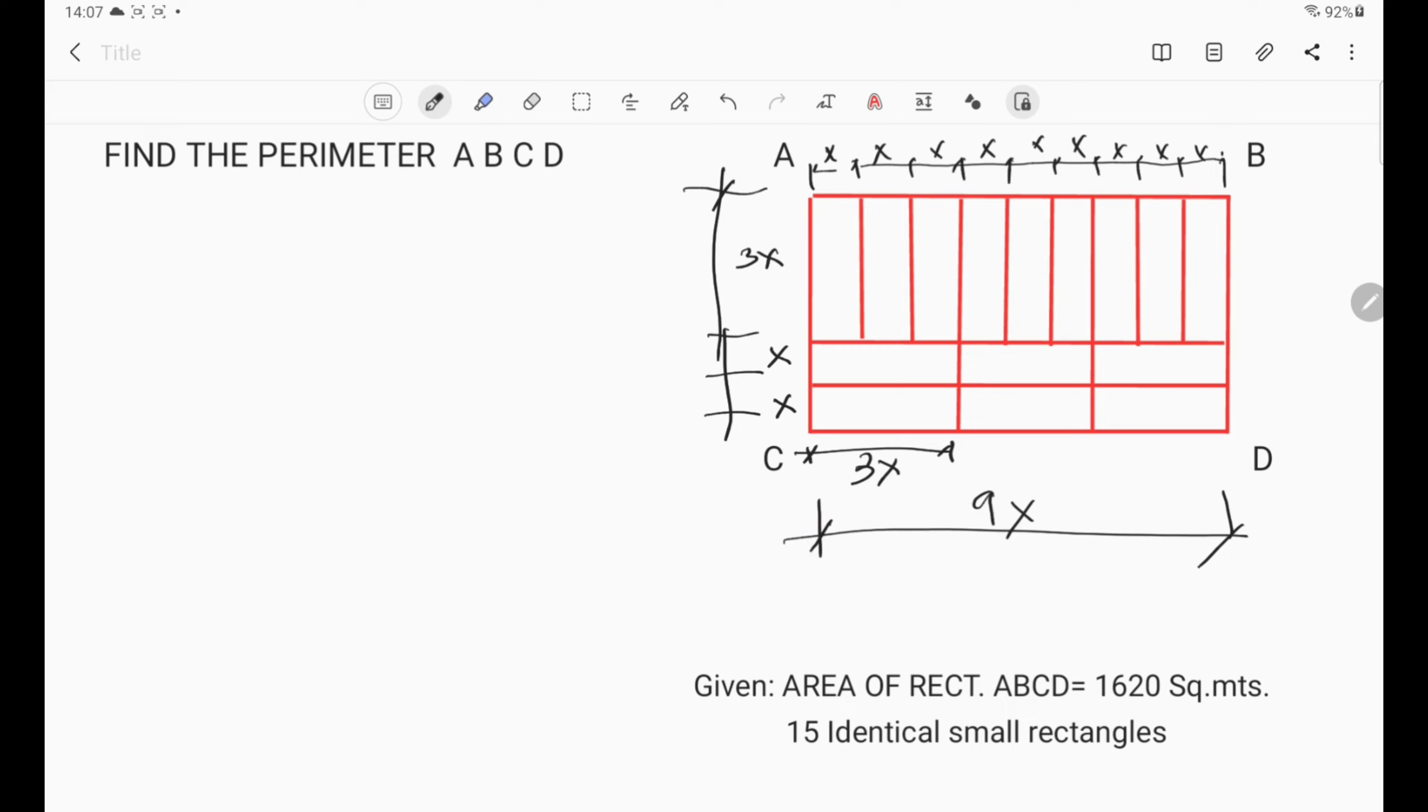Because they are all identical, the distances are the same. So we can see that the length of the rectangle is equal to nine x, and the width of the rectangle is equal to five x.